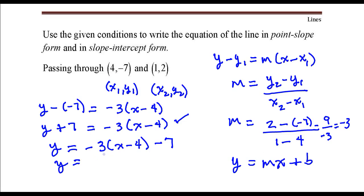Now I'm going to distribute this negative 3 to each of these terms in parentheses here. Negative 3 times x, that's negative 3x. Negative 3 times negative 4, that's a positive 12.